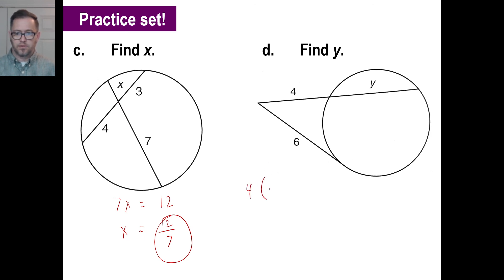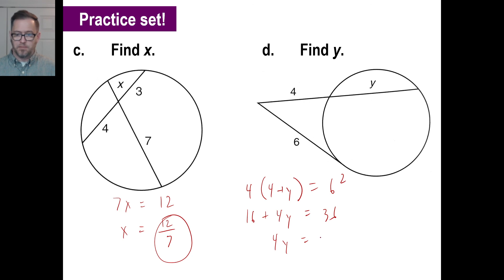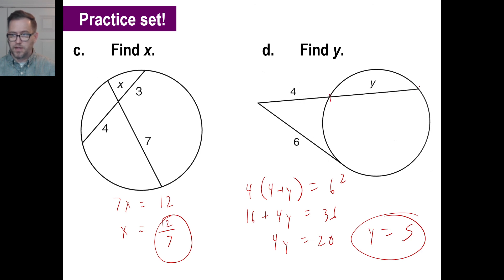Problem D looks like this: 4 times (4 plus y) equals 6 squared — that's a tangent. So 16 plus 4y equals 36. Then 4y equals 36 minus 16, so y is going to equal 5. Does it pass the smell test? Is this 5 in length? Yeah, it's a little long — yep, that works. I'll see you guys next time, have a great day.